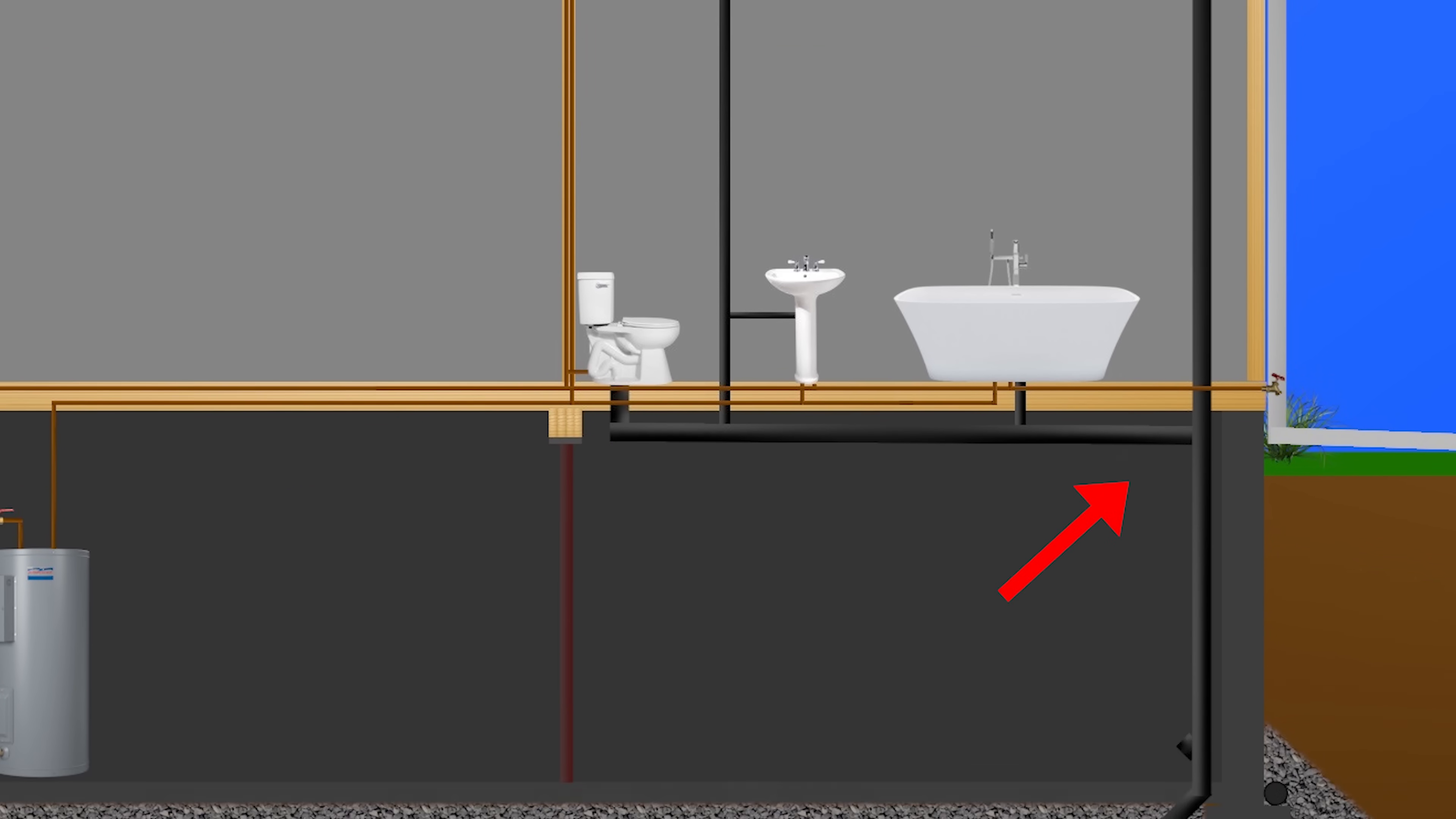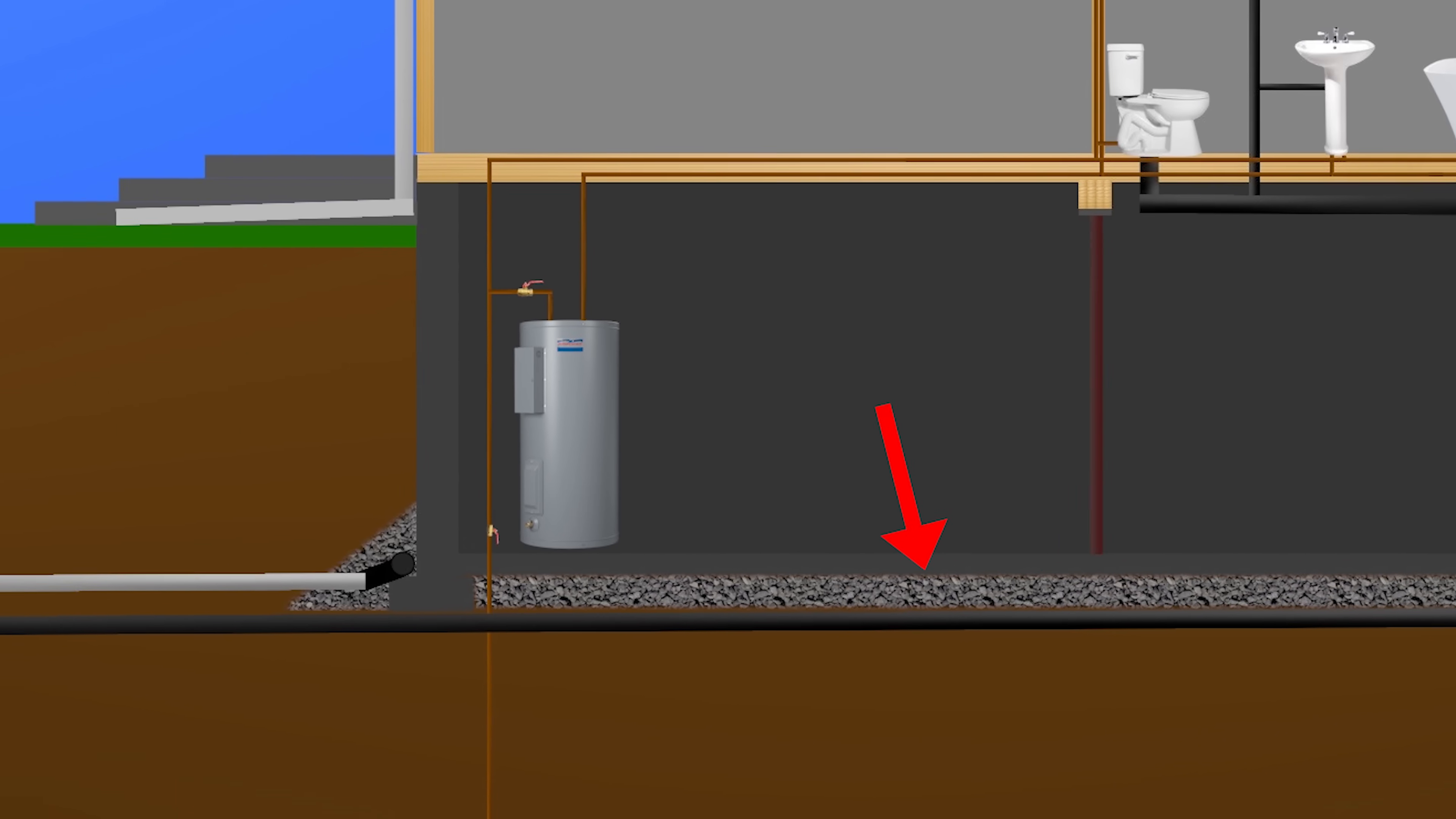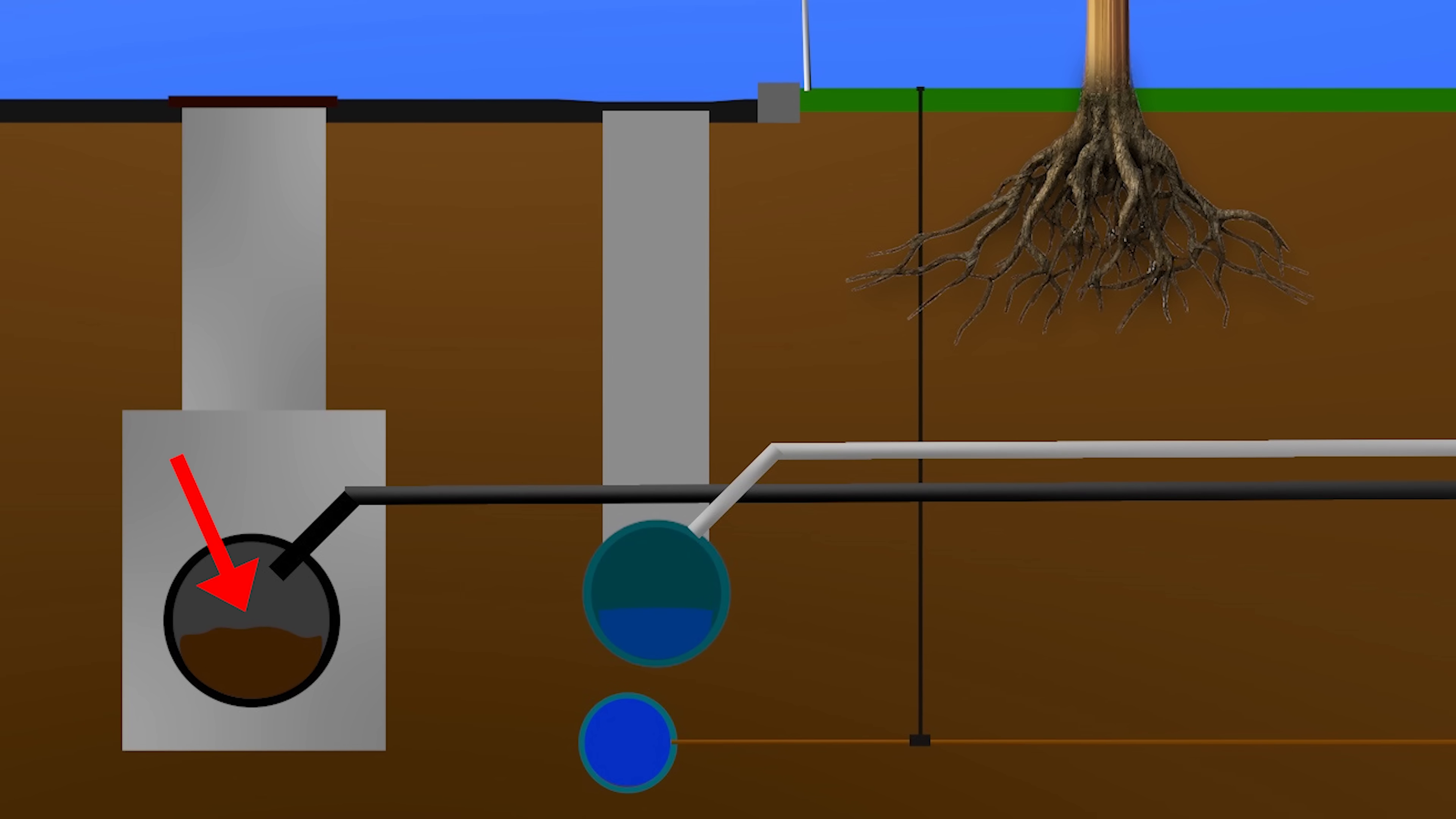When the fixture is used, the waste is carried inside these drain pipes that have a slight slope to them down the main drain until it reaches the municipal drain under the street. I'll also show where this waste goes later in the video.